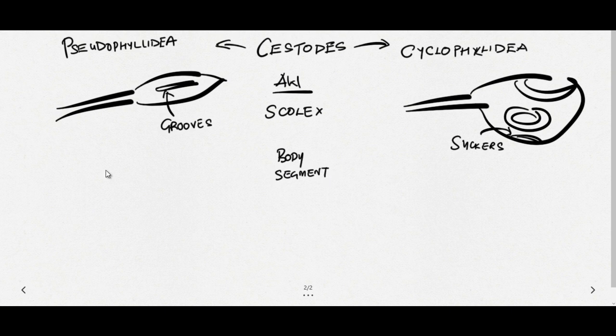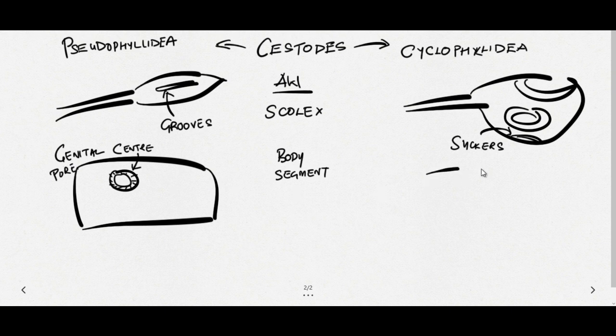If we talk about body segments, body segments have genital pore and this genital pore is usually opening into the center of the body segment. So the male reproductive organs open via this genital pore into the center of the body segment in case of Pseudophyllidean. While in case of Cyclophyllidean, this genital pore opens laterally on the margins of the segment.